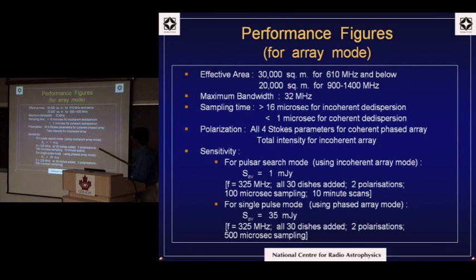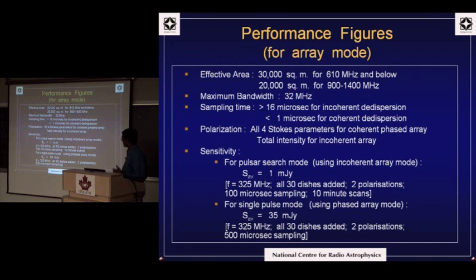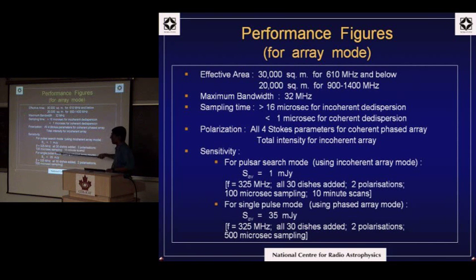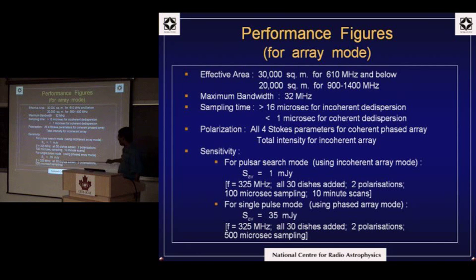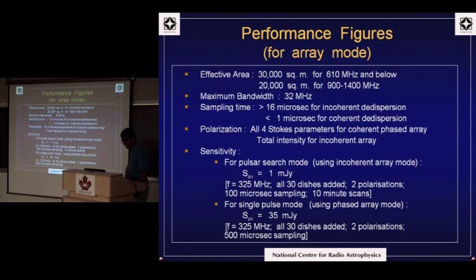For the array mode of operation: in 10 minutes of observing with the full incoherent array, you can go down to one millijansky strength of pulsars. If you're looking at single pulses and want to see each pulse from the pulsar, you can see it at the level of five sigma detection for a 35 millijansky pulsar using the full array in phased array mode.